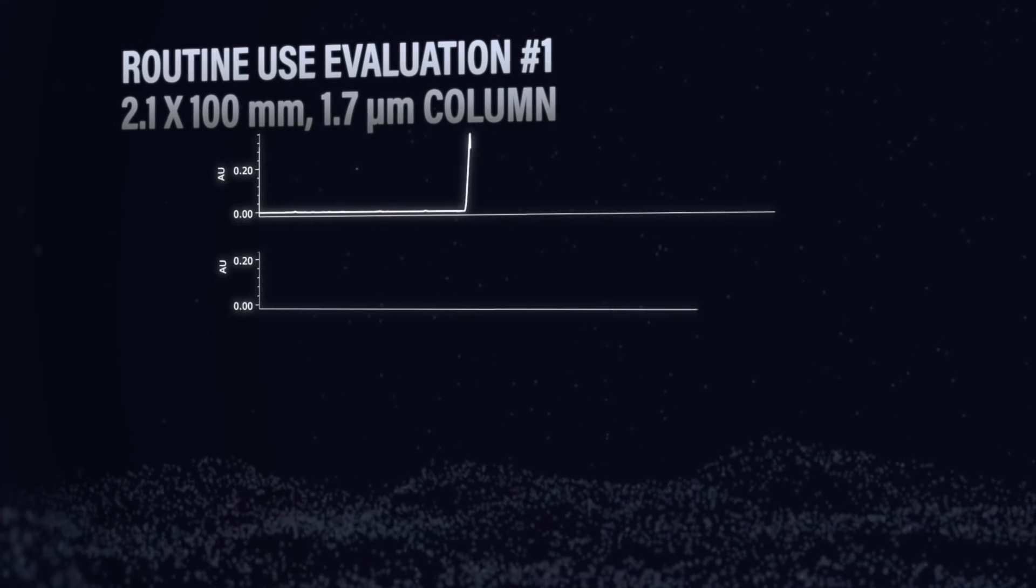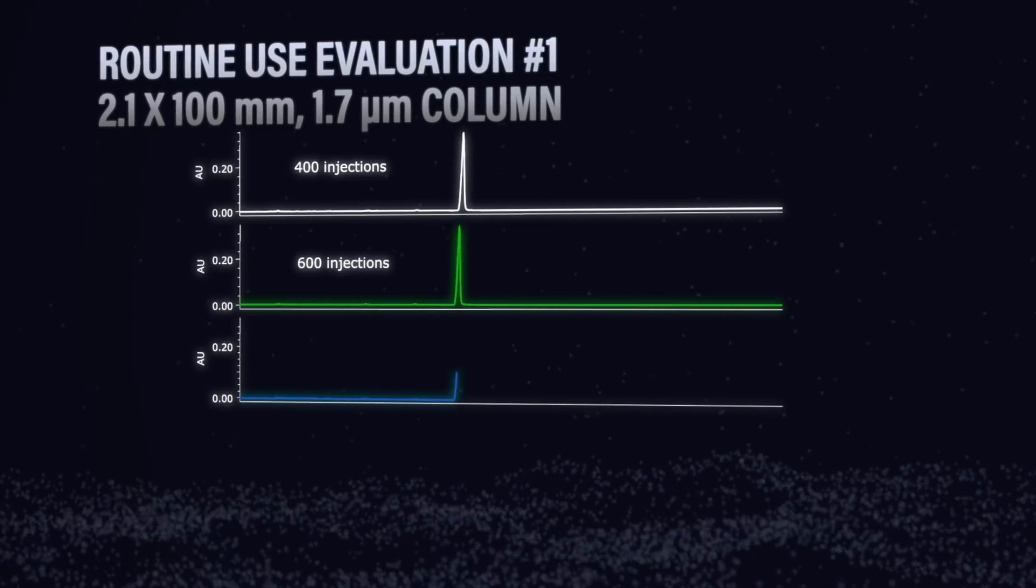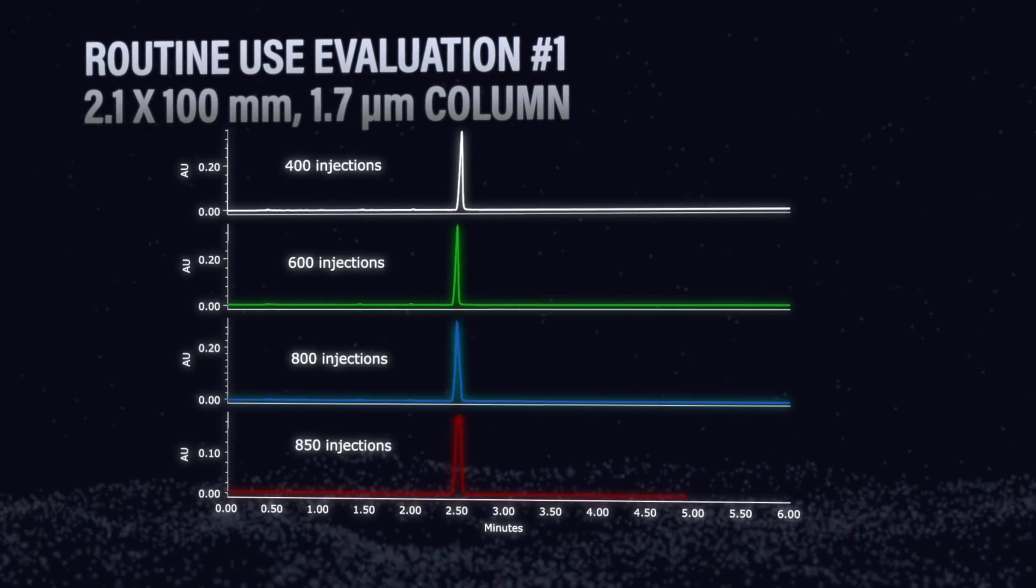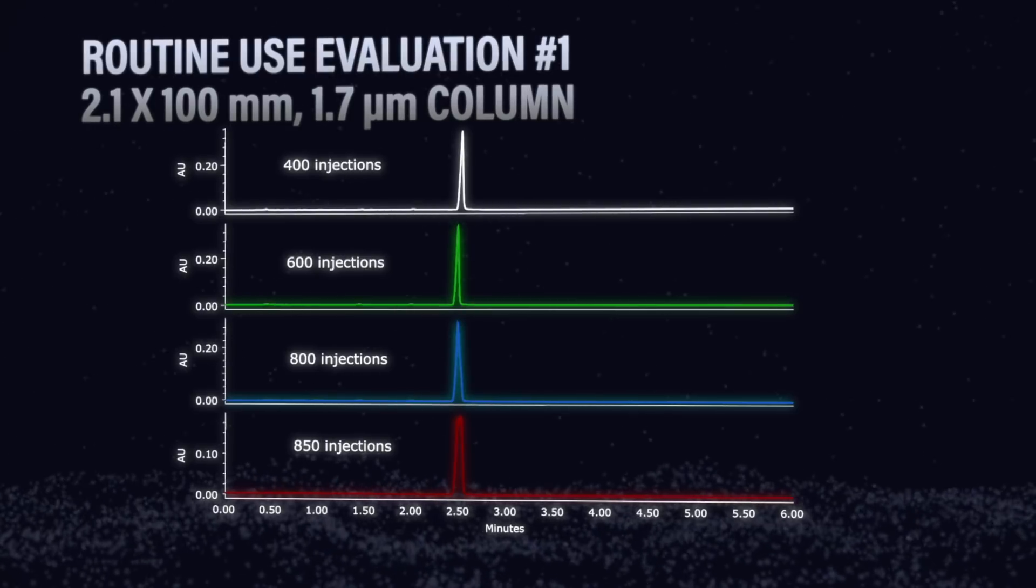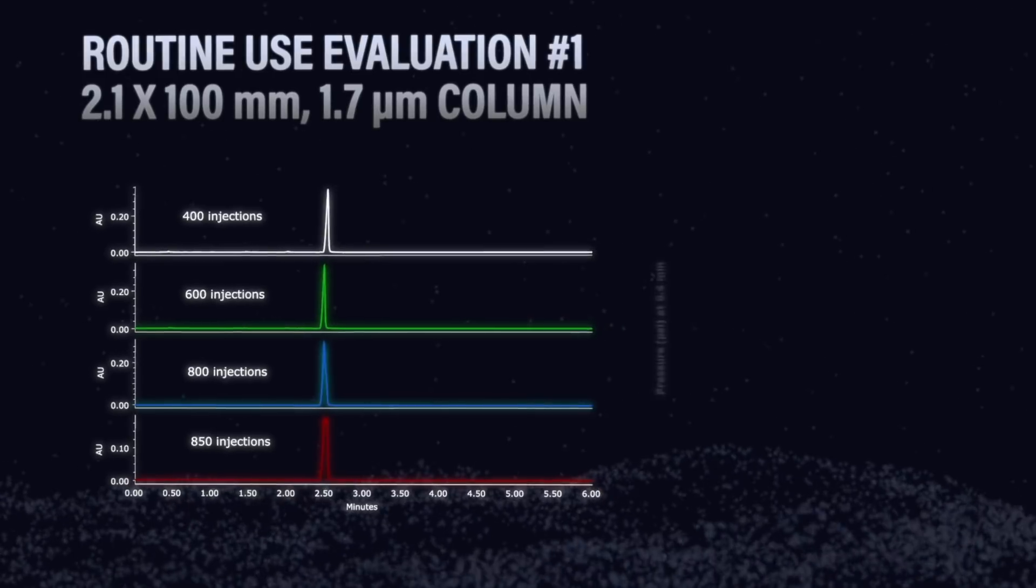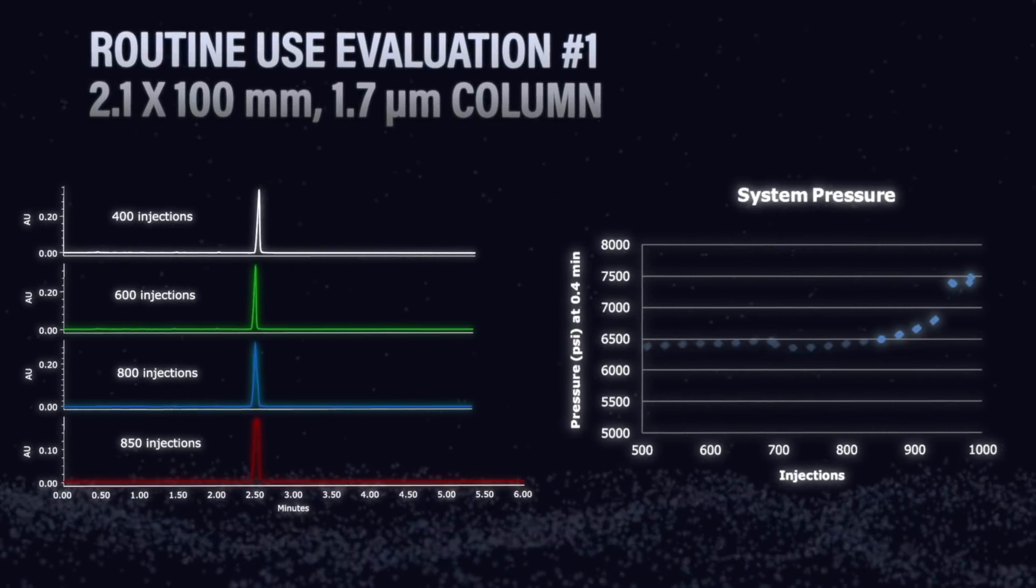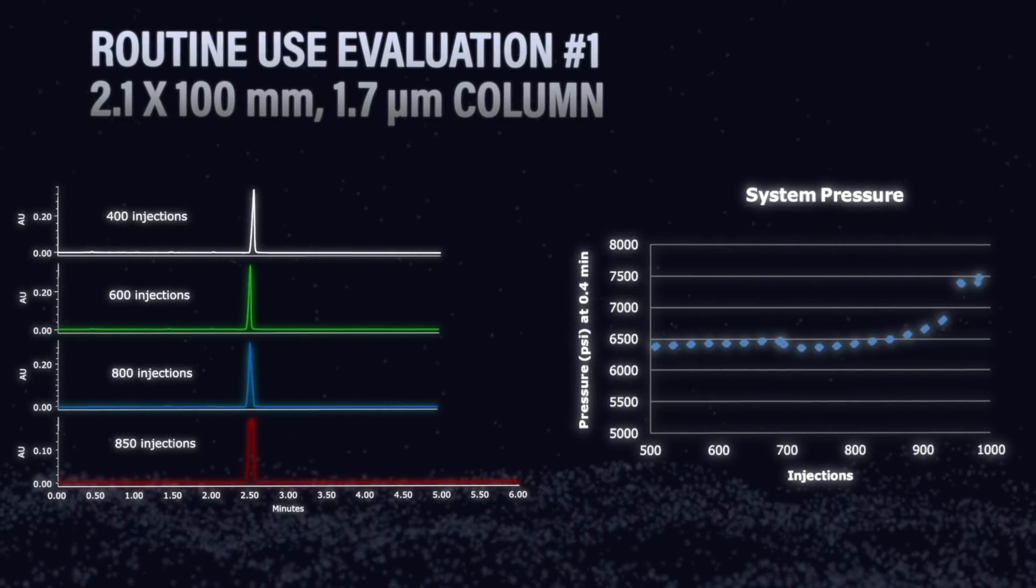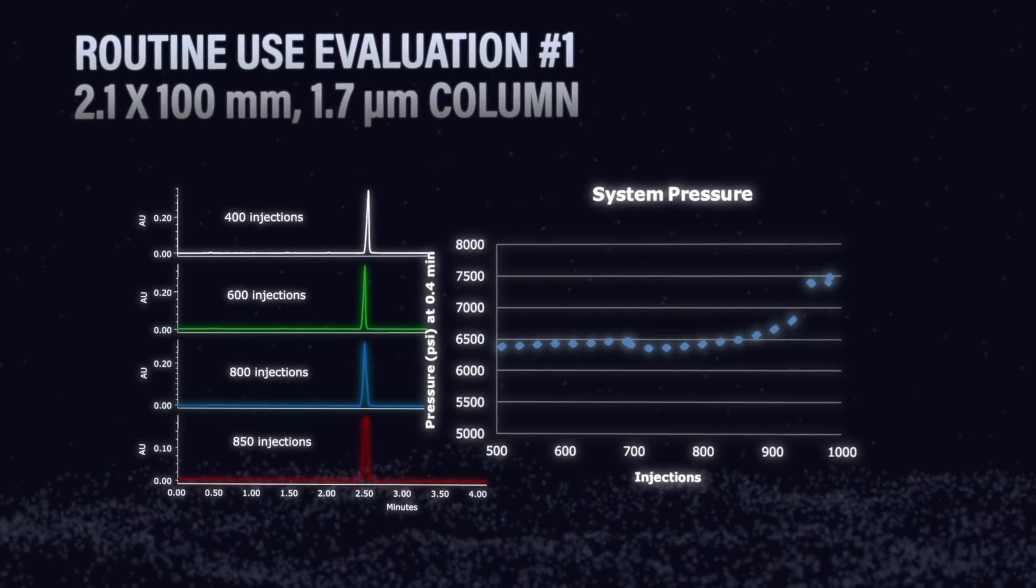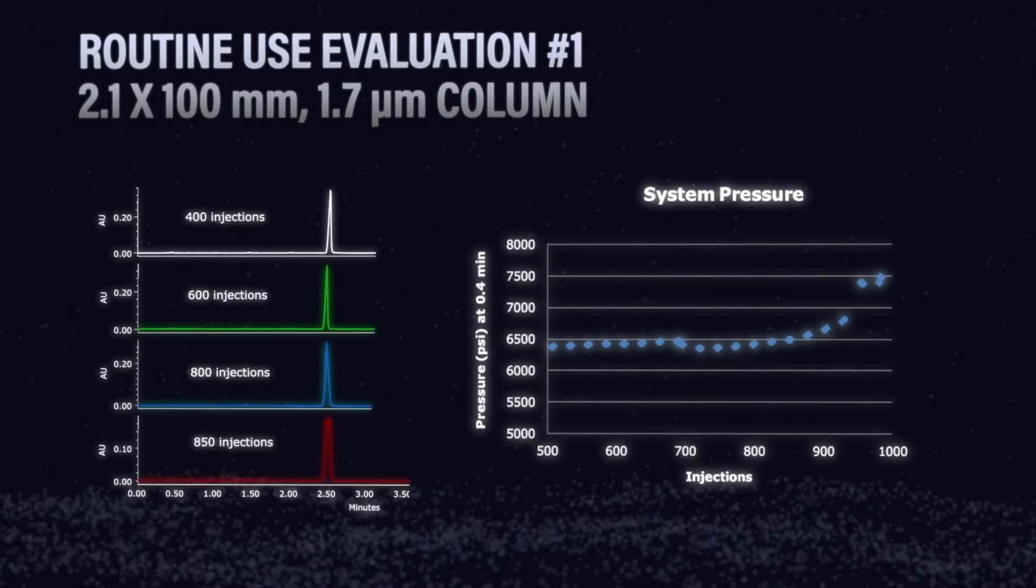How'd we make out in fouling up those columns? We did a good job. If we take a look at the injections, you can see that we've plotted them 400 injections, 600 injections, 800 injections, all the way up to 850 injections on the 1.7 micron column. You can see that the pressure is stable for a little while but then it quickly starts to go up as we get past 800 injections. It's really in line with the pressure. The fact that you see the split peak at 850 injections is a really good indicator that that crud that we put on there is really starting to plug up that column and it's not working as it should.